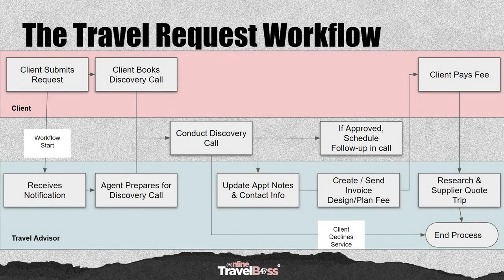Here's the general flow: pink represents the client and blue represents the advisor — you'll see this throughout all subsequent OPUS trainings. A client goes to a central location that you set up in whichever system you decide to use, and submits their request. After submitting, they get an opportunity to book a discovery call with you if that's part of what you do. Once the request is submitted, the workflow behind the scenes should start to initiate.